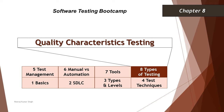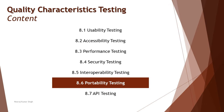Hello friends, greetings for the day. Welcome back to another tutorial on our software testing boot camp where we are talking about the fundamental concepts of software testing. As part of this, we are in chapter eight talking about quality characteristics testing, continuing ahead with the next segment: 8.6 portability testing. Portability is about how to move an application from one platform to another, or testing the system in multiple environments.